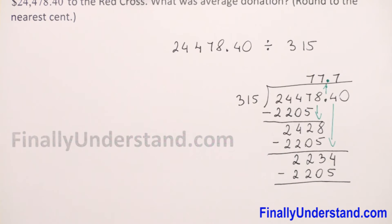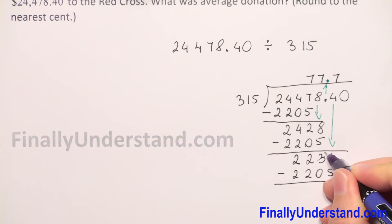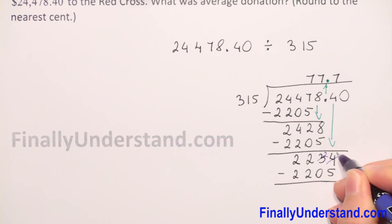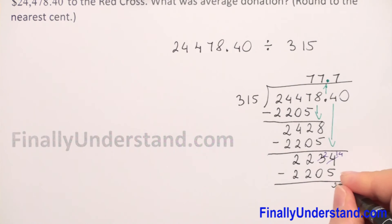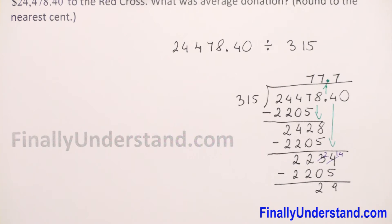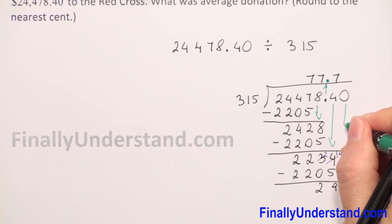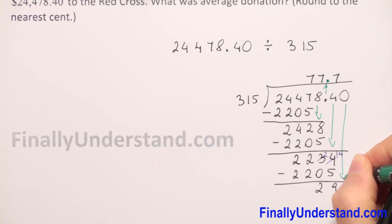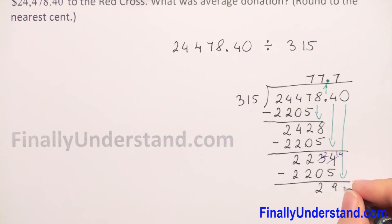We have 4 minus 5 — we cannot do that, so we borrow 1. It becomes 14 minus 5 is 9, 2 minus 0 is 2, 2 minus 2 is 0. We don't write that. The next digit is 0, so we bring it down and have 290.